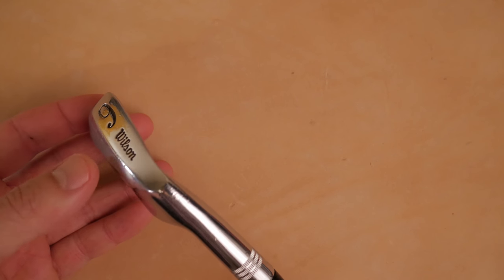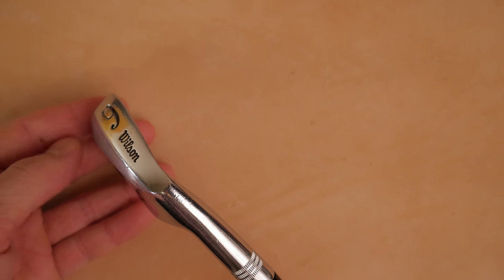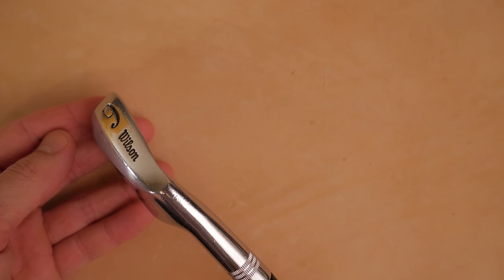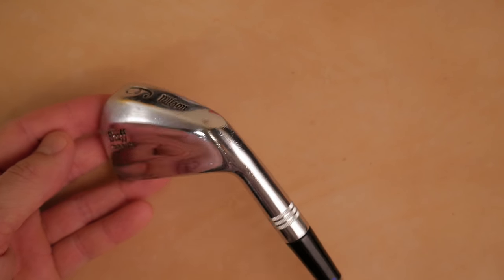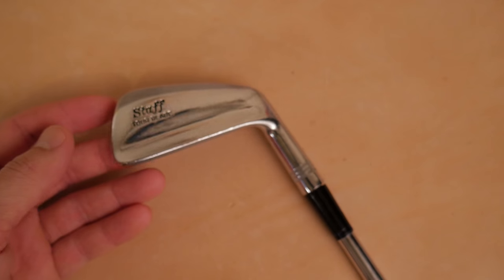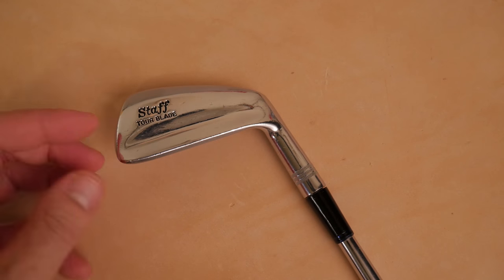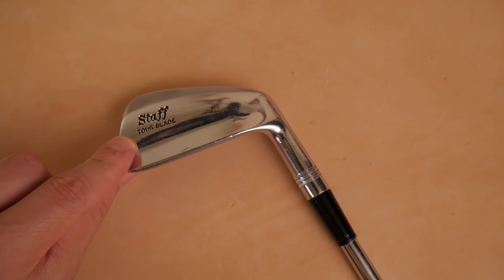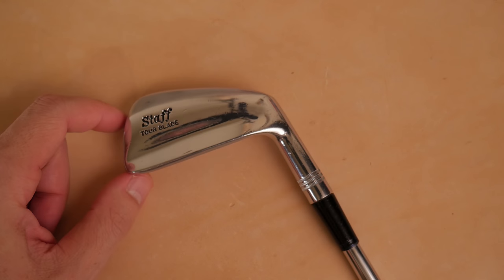So on the sole, you can see Wilson with the number, which looks like for some reason the same font all the other irons have. I wonder if they're made in the same factory or something. Why do they all have the golf font? Staff Tor Blade towards the toe here.